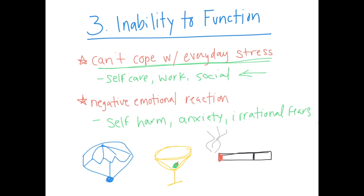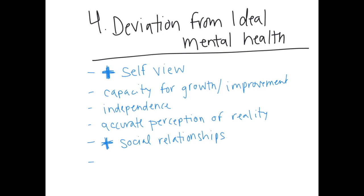And finally, the last criterion is our behavior. If considered abnormal, it would deviate from the ideals of mental health. There are six ideals of mental health. The first is a positive self-view. The capacity for growth and personal improvement. Independence. An accurate perception of reality. Positive social relationships or interactions. And finally, the ability to meet the demands of day-to-day life. So these six traits or factors were laid out to describe an individual who would have perfect mental health.